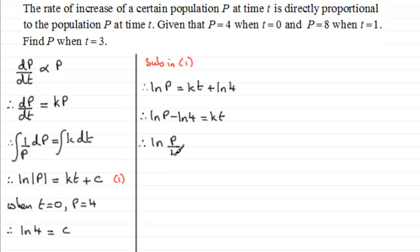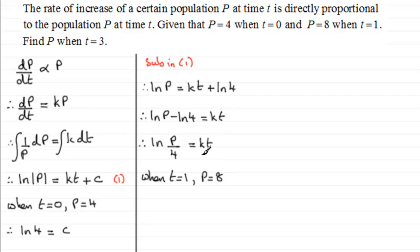Now we can work out the constant k using the second boundary condition: when t equals 1, p equals 8. Substituting in, we get the natural log of 8 over 4 equals k times 1, so k equals the natural log of 2.